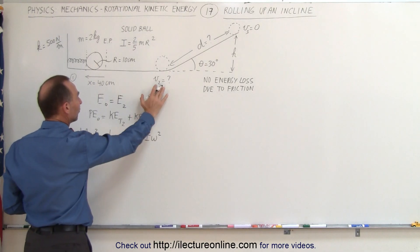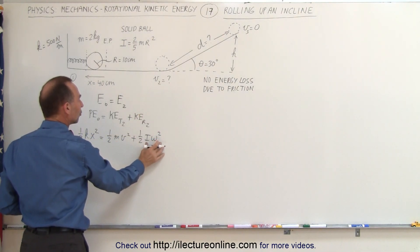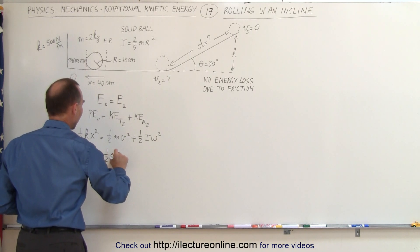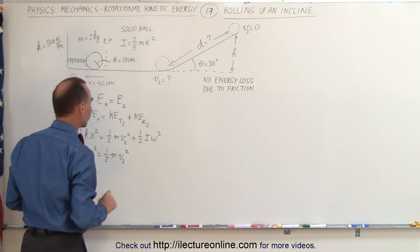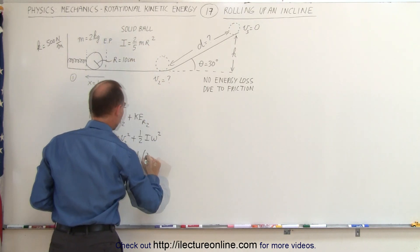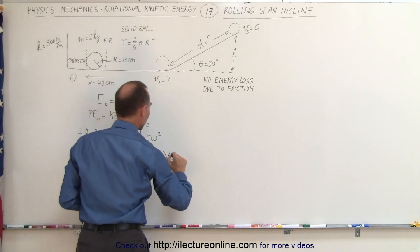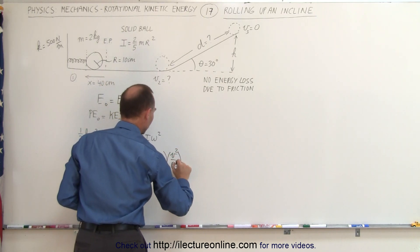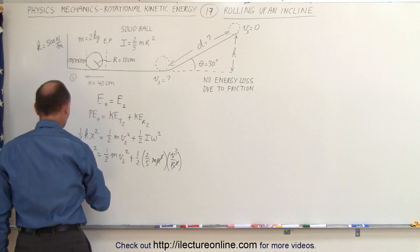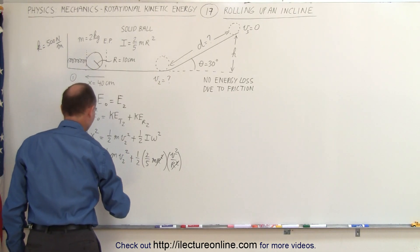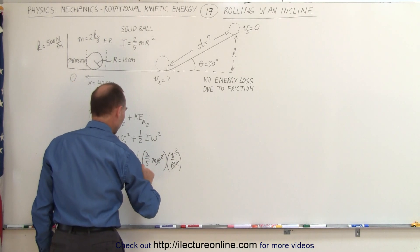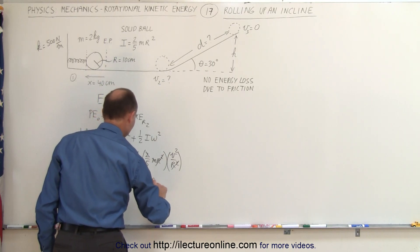Now, what we're trying to do is find out what v is, so we have to express I and omega in terms of v and m. 1/2 kx² equals 1/2 mv², and that, of course, will be v at location 2, plus 1/2 times the moment of inertia of a solid ball, which is 2/5 mr². And omega can be written in terms of v divided by r, and we have to square those because it's omega squared. Then you can see that the r squares cancel out, and we can write this as 1/2 kx² equals 1/2 mv₂² plus 1/5 mv₂².